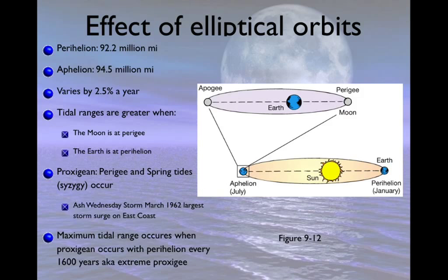Now we need to talk about elliptical orbits. The root 'helion' means sun. Perihelion is the point at which the Earth is closest to the Sun, which tends to occur in January — about 92.2 million miles away. Aphelion is when we're farthest away, at 94.5 million miles, occurring in July. We average them together to get the 93 million miles most people quote.